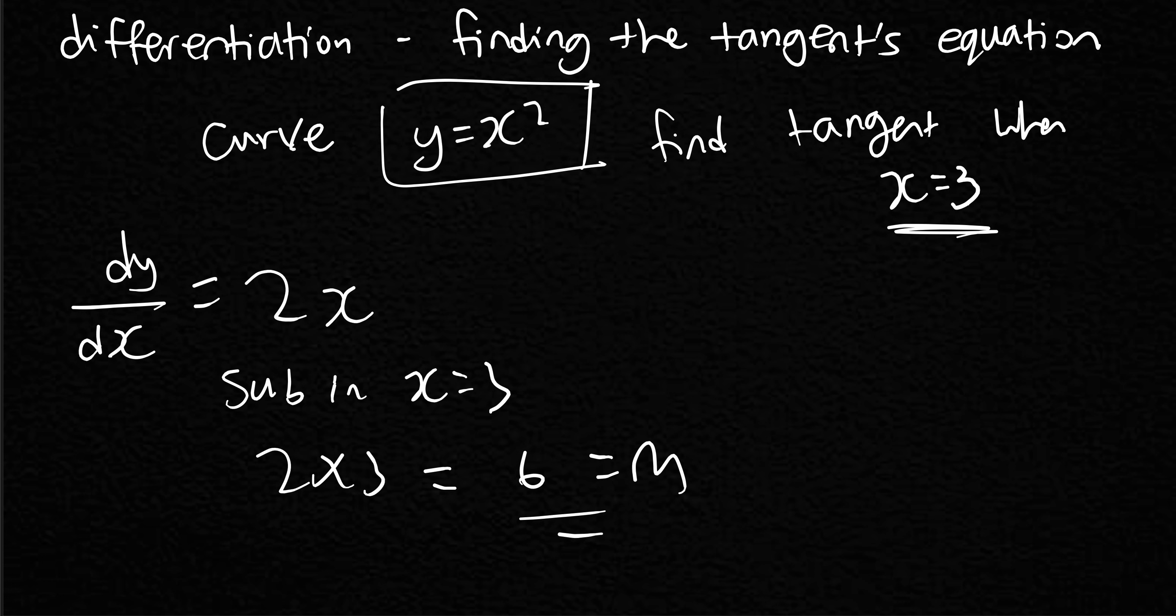Now, we have the x-coordinate. So we know that the x-coordinate is 3. We don't know the y-coordinate, which we need to find the equation of the tangent. And we also know that the gradient is 6. How do we find the y-coordinate? Well, the equation was y equals x squared. When x is 3, we just sub x in. So 3 squared is 9. So our y-value is 9.